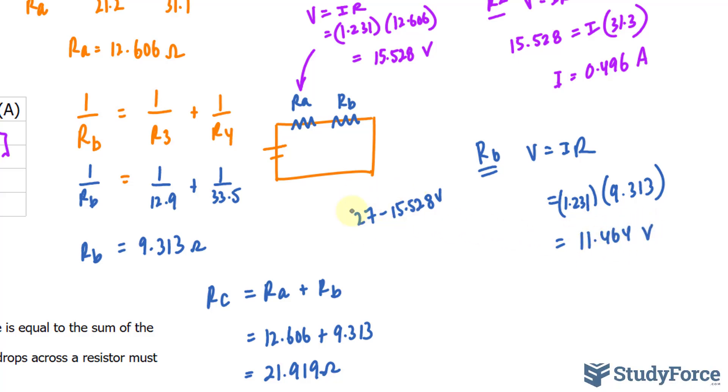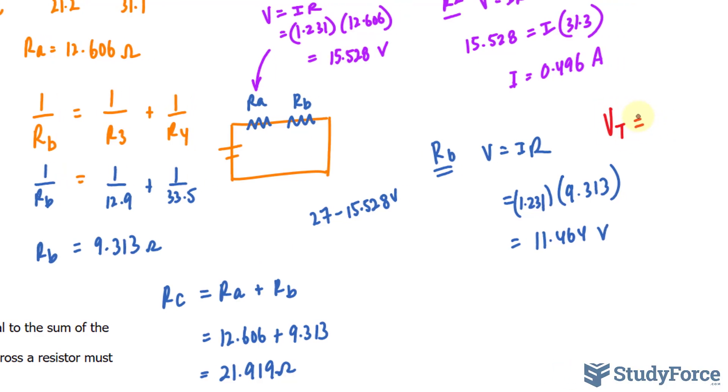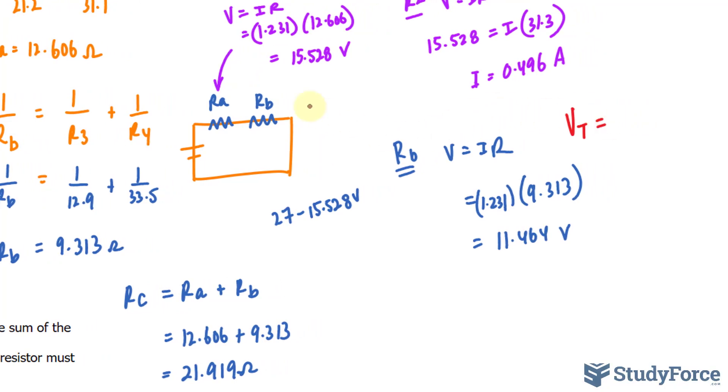Believe me, this would be the same if we were to subtract these two values. And again, that is expected because the total volts, which was 27, is equal to all of the voltages combined, which would be the voltage at RA, which I'll call VA, and the voltage at RB, which I'll call VB. Anyway, let's continue.